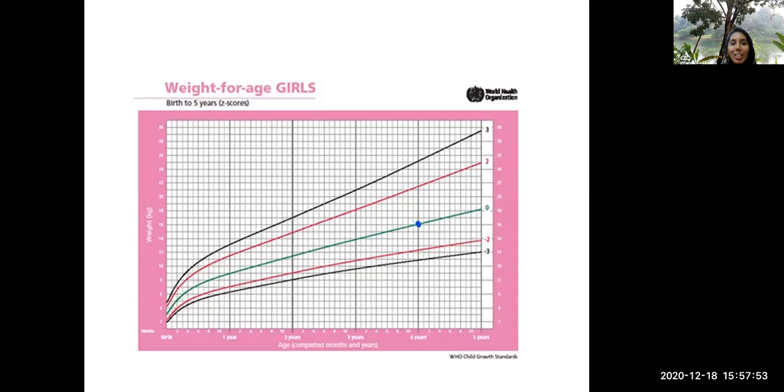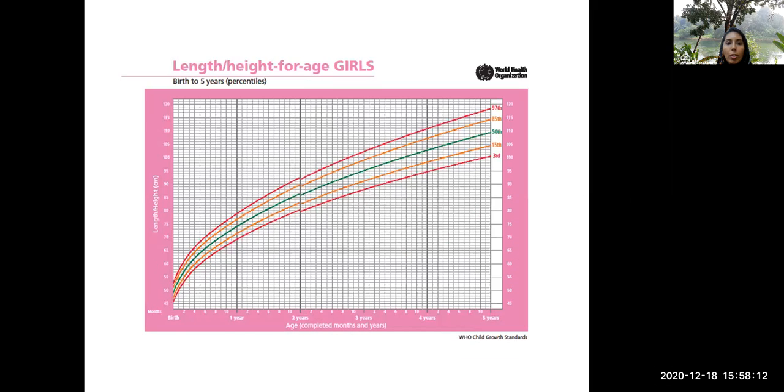Before I tell the answer, I think you can actually plot it and see whether your answer is correlating with my answer. If any doubts, you can put it in the comment box. So when I plotted it at four years, I got this as zero. This means the child has normal weight, not underweight.